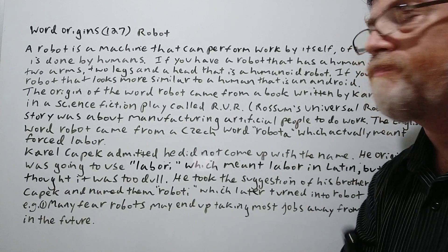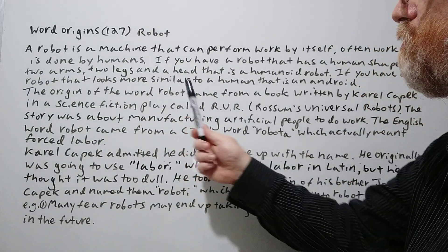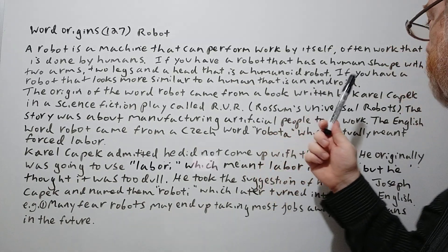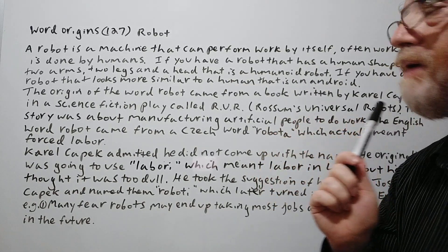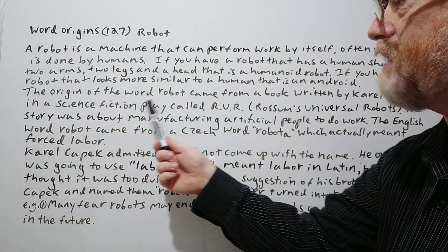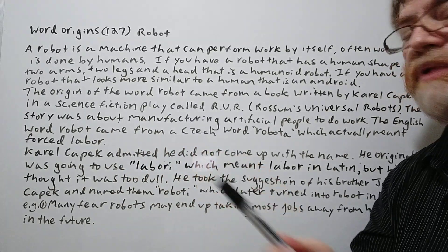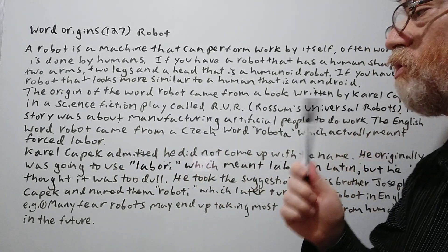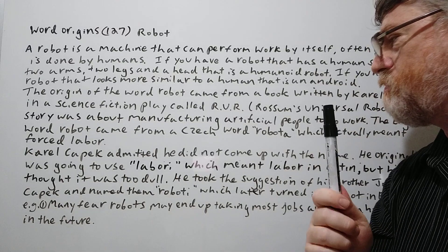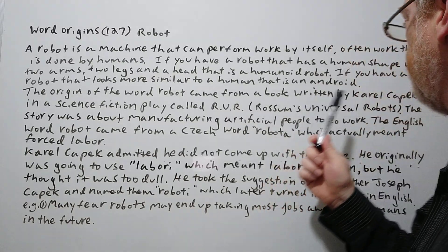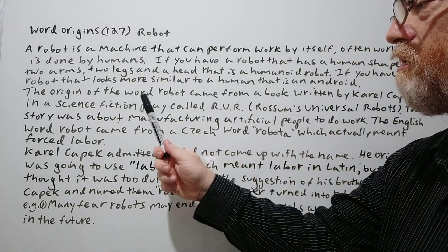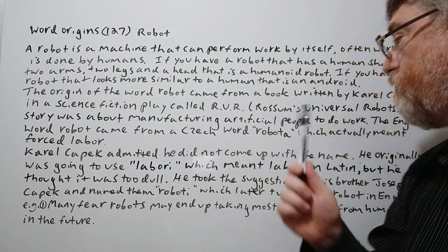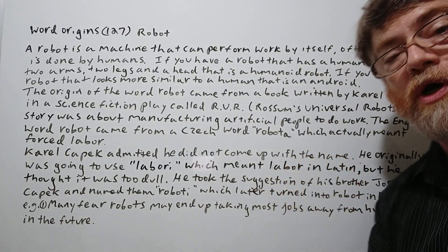The origin of the word robot came from a book written by Karel Čapek, in a science fiction play called R.U.R. — Rossum's Universal Robots. This was in the early 1900s. The story was about manufacturing artificial people to do work.